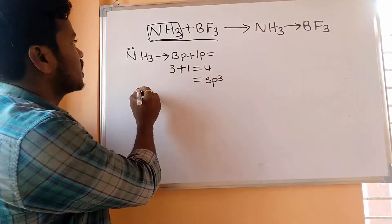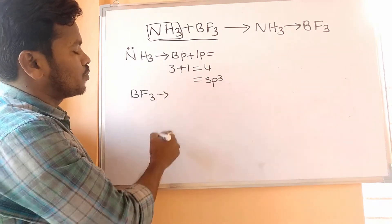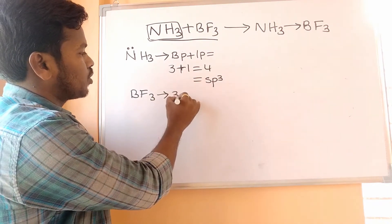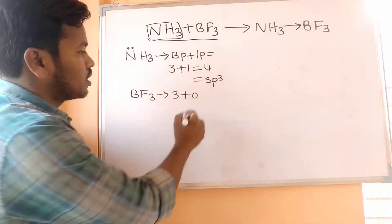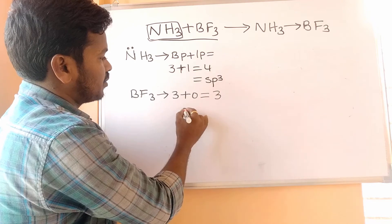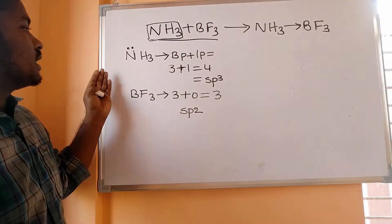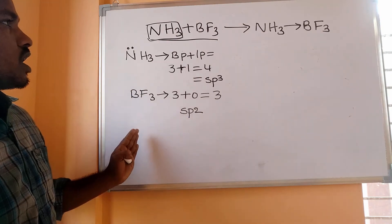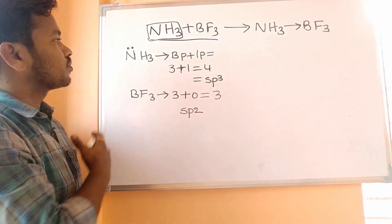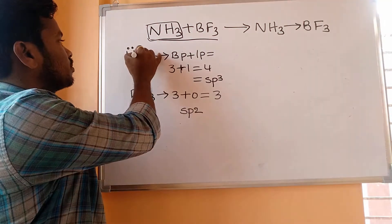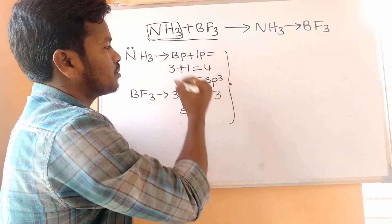For BF3: bond pairs plus lone pairs. BF3 has three bond pairs and zero lone pairs, so the steric number is three — the hybridization is sp2. Before the reaction, BF3 is planar in structure and NH3 is trigonal pyramidal in structure.